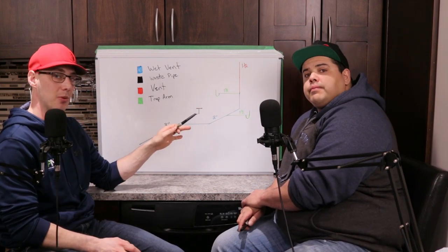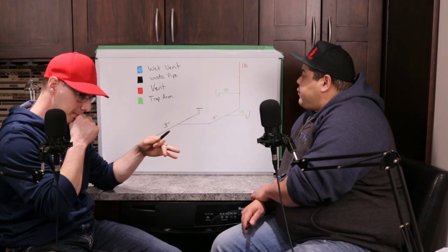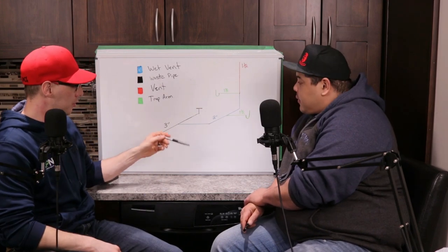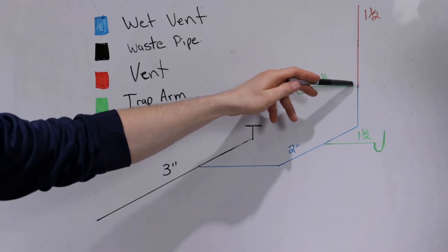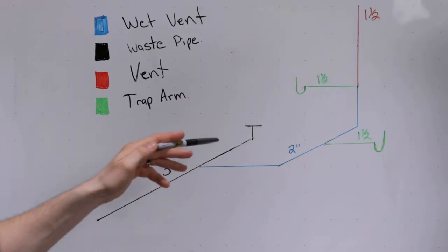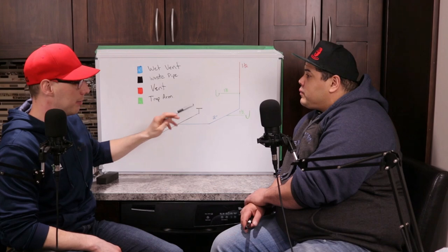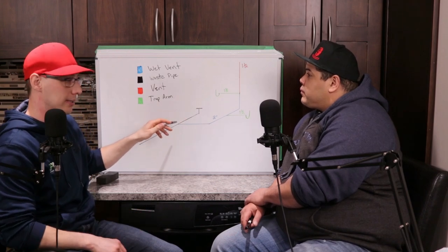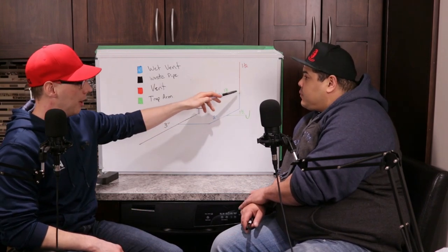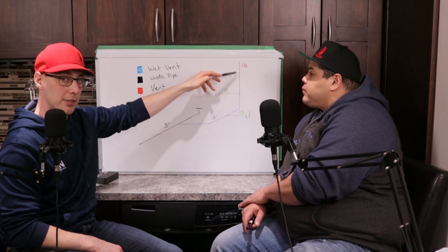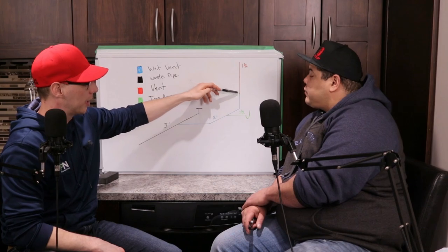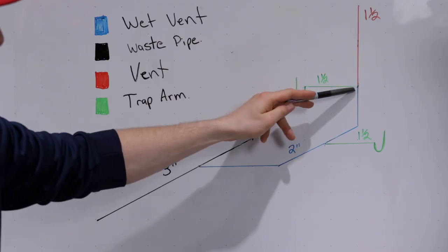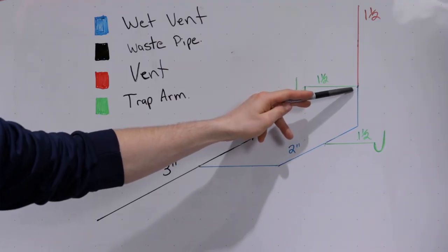The next thing we're going to talk about is where the wet vent is going to start and end. This is your inch and a half vent. The minimum vent size for a toilet is inch and a half. In some cases some people say you can use an inch and a quarter - it does depend on how many fixtures are going into there. But in this case we're going to have an inch and a half vent coming off for this three-piece bathroom.